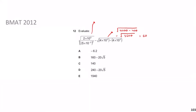Now for the harder term: we have the cube root of (2 × 10⁵) divided by (25 × 10⁻⁶). The trick here is to multiply top and bottom inside the cube root by 4. The numerator becomes 8 × 10⁵, and the denominator becomes 100 × 10⁻⁶ = 10⁻⁴.